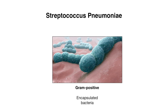Pneumococcal vaccinations target Streptococcus pneumoniae, which is a gram-positive encapsulated bacteria. The term encapsulated bacteria refers to bacteria that are covered with a polysaccharide capsule, in addition to the other membranes that bacteria have.